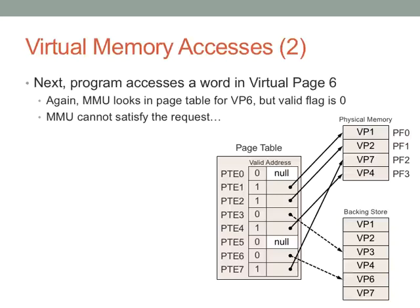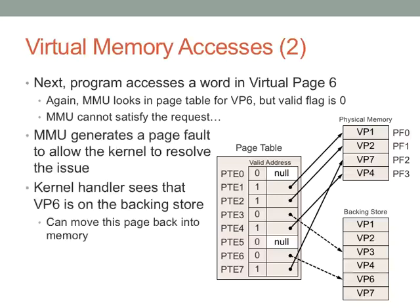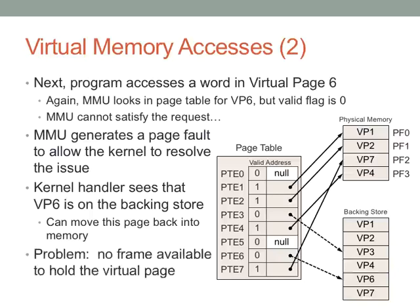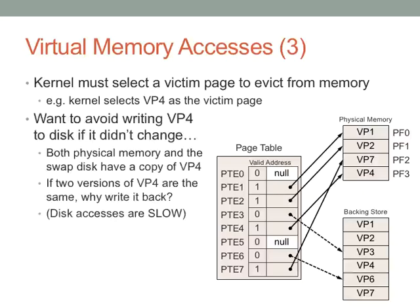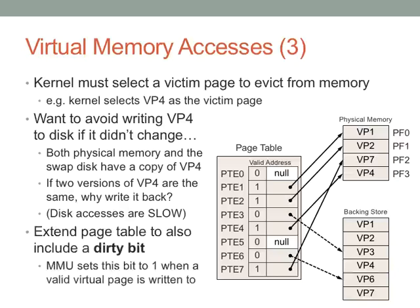The MMU says it can't do this and generates a page fault. The kernel steps in, says this is something that's actually available but it's on the backing store, so it starts the process of moving that into memory. This is where we have mechanism and policy — we need to figure out which frame to use for this new page, which means we have to choose one to evict, and the choice of who to evict is policy. Let's say we pick virtual page four. If it's changed, we need to save its changes. If it hasn't changed since we loaded it last time, we don't need to do anything else — so it's nice to also keep a dirty bit.